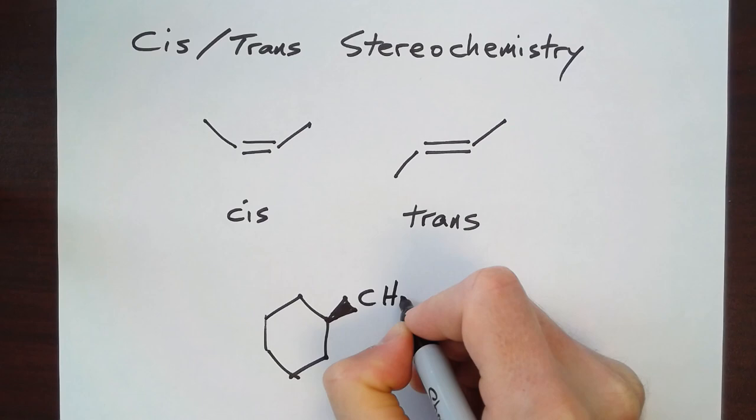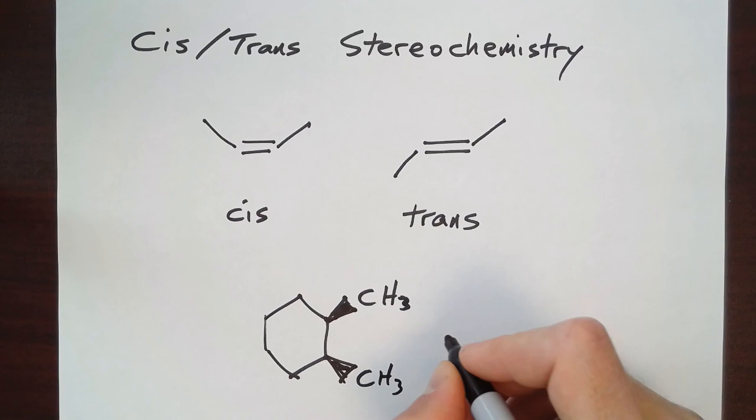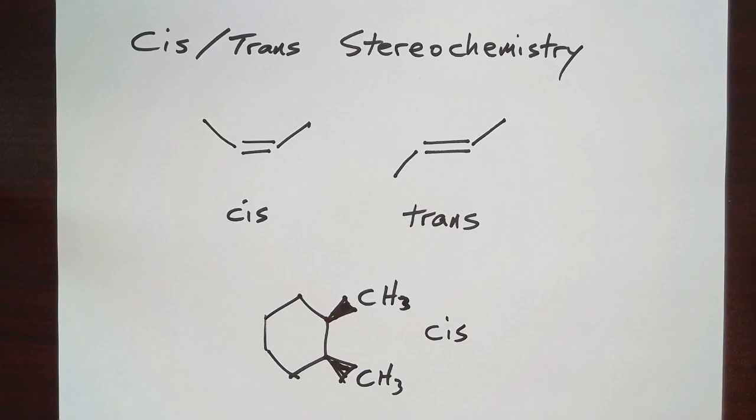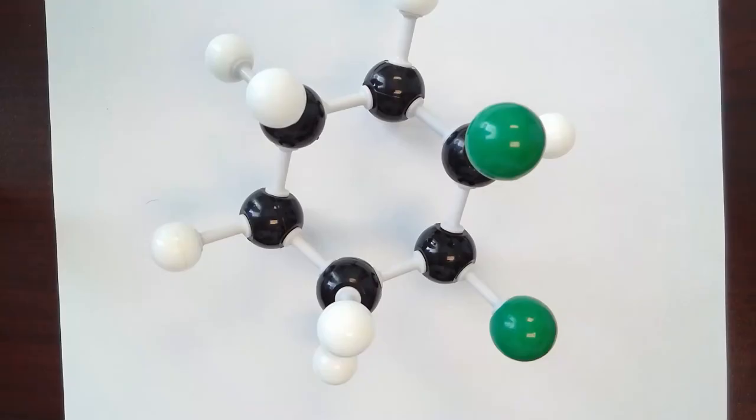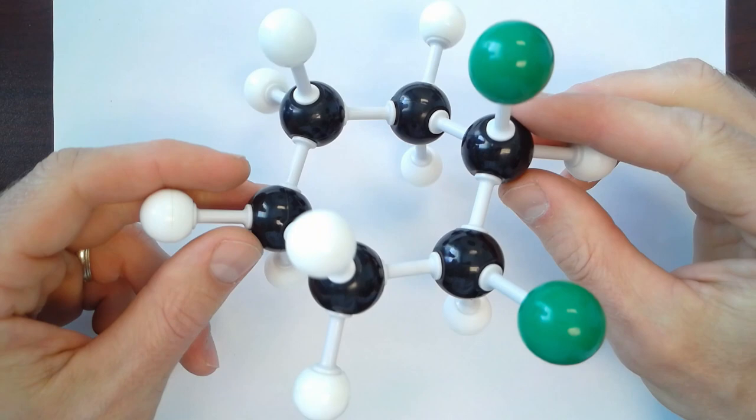Cis-1,2-dimethyl-cyclohexane then would look like this, because both methyl groups are on the same side of the ring. More accurate descriptions of the conformations of a cyclohexane are not as simple to interpret.